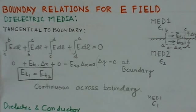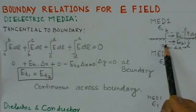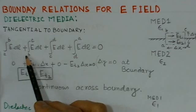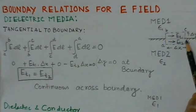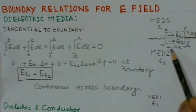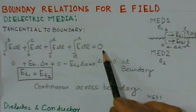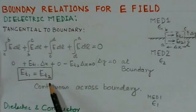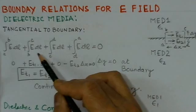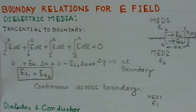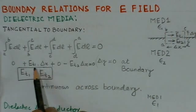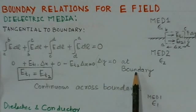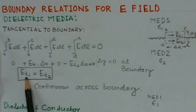Since the voltage around a closed path is zero in an electric field, E·dL equals zero. Applying this to the rectangle along the path A→B→C→D→A, and noting that for the actual boundary delta Y tends to zero, the terms containing delta Y (the AB and CD path lengths) go to zero. We are left only with the tangential parts: Et1·ΔX minus Et2·ΔX equals zero, giving us Et1 equals Et2.